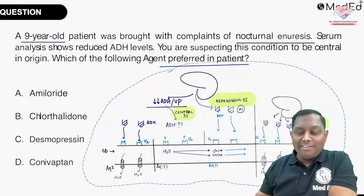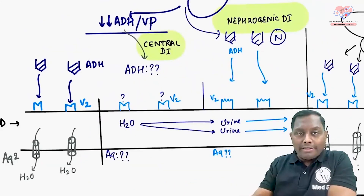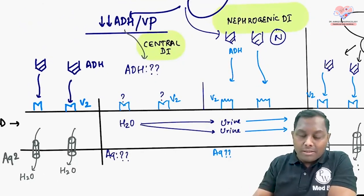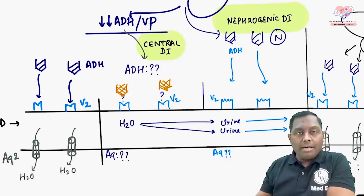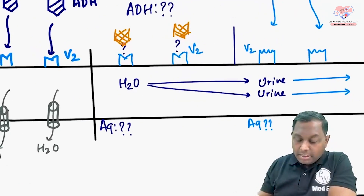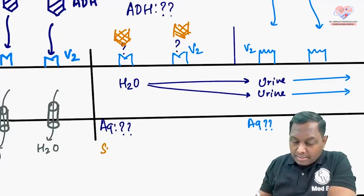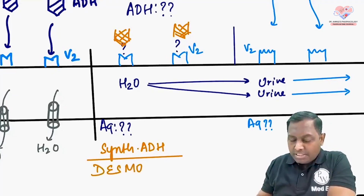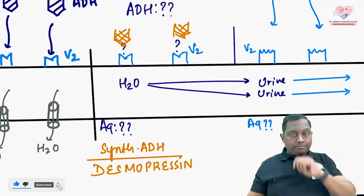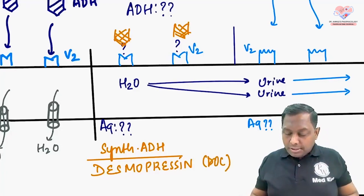Since ADH is not coming from the brain in central diabetes insipidus, what do we do? We give a synthetic ADH — an ADH analog that will behave like ADH. We give synthetic ADH stimulation using a drug known as desmopressin. Desmopressin is considered the drug of choice for central diabetes insipidus.